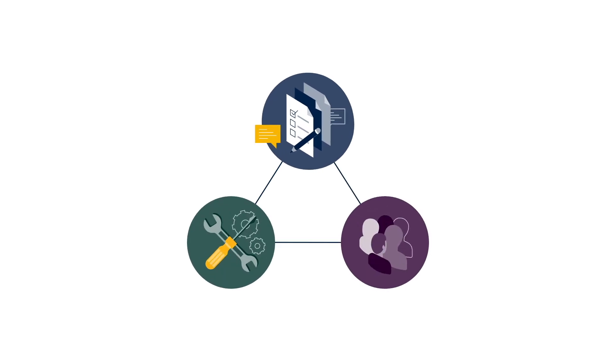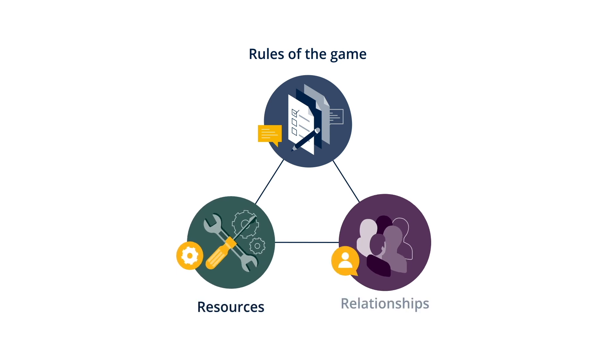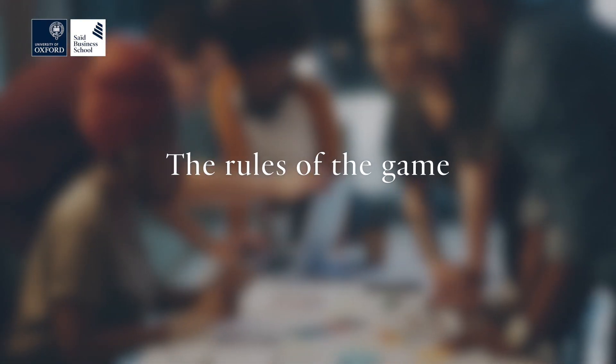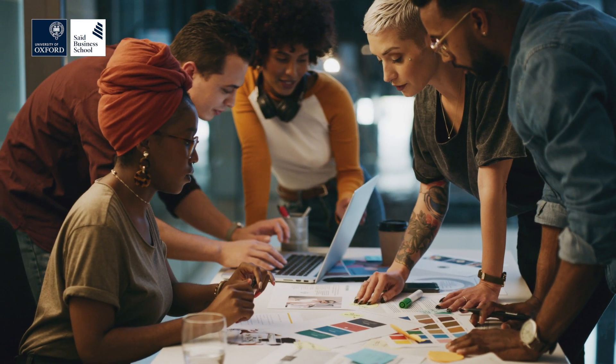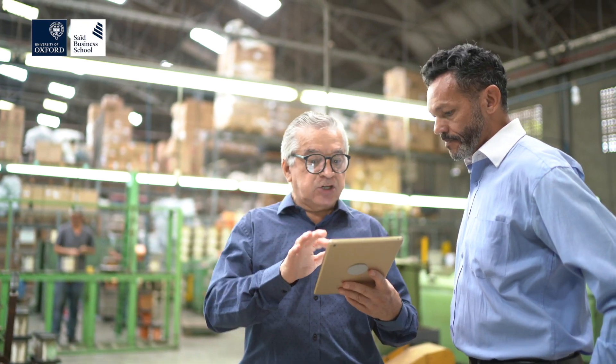The three R's are: what are the current rules of the game, what are the current resources available to you, and what are the relationships that you have. Rules of the game are the values and norms held by the dominant coalition. They reflect how we do things in this organization — what's appropriate, what's expected. Rules of the game can be both explicit and visible, but also tacit. So the work of understanding the rules of the game is a non-trivial task.